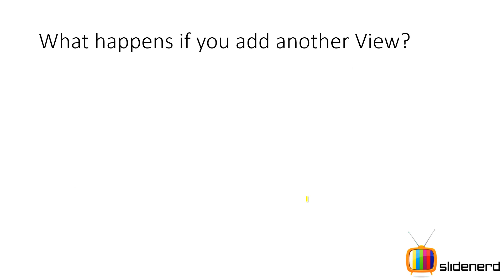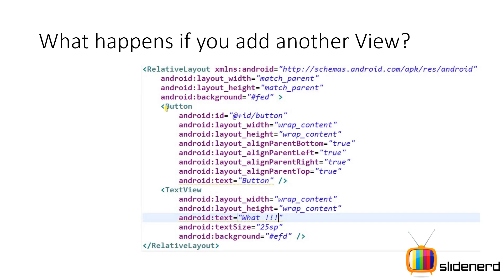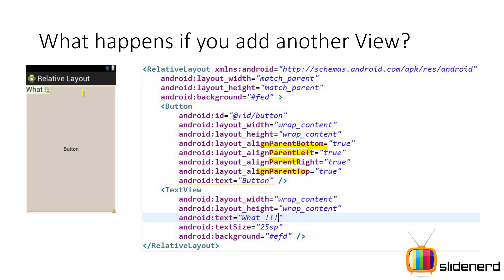Now let's talk about what happens when you add another view. I have the same button with alignParentBottom, alignParentLeft, alignParentRight, and alignParentTop all set to true, meaning the button has taken the complete space on the screen. Below that I have a text view which I have not specified anything about. What happens is the text view goes on top of the button — this is the default behavior of a relative layout. Whenever you keep adding controls they just get added on top of each other. You also need to specify where the text view is going to appear in relation to the button, which is why it's called a relative layout.